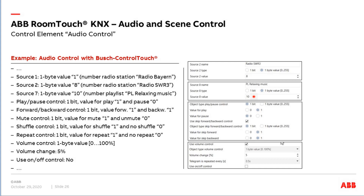I want to use on/off and play/pause as one bit: value one for playing and value zero for pause. For backward with value one I go backward, and with value one for a separate object I go forward — using two different group objects. I also want to control the volume with a range from 0 to 100%, and every time I press the plus or minus button we send a new value of plus 5%.